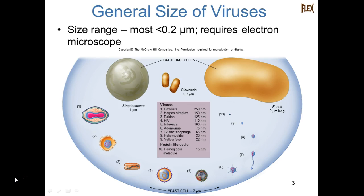Here we can see examples of the size of viruses compared to some bacteria. Streptococcus is about one micrometer in diameter, and E. coli is about twice as long. The smallest bacteria of medical concern are the rickettsia, at about three-tenths of a micrometer. Looking from left to right, the largest virus that infects humans is the pox virus, which is actually visible as a tiny dot under the microscope at 1,000x magnification. Herpes simplex is quite large, going down to the smallest — the yellow fever virus, number nine, which is related to Zika.